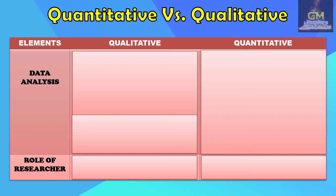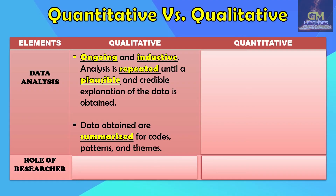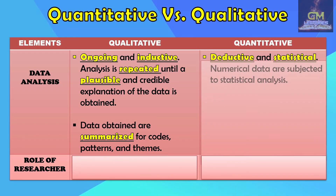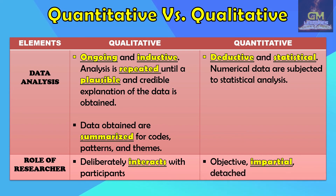In terms of data analysis, in qualitative research the analysis is ongoing and inductive, meaning it is repeated until a credible explanation of the data is obtained. Qualitative data are summarized for codes, patterns, and themes. Whereas in quantitative research, the data analysis is deductive and statistical, meaning numerical data are subjected to statistical analysis. With regard to the role of researcher, a qualitative researcher deliberately interacts with the participants, while a quantitative researcher is seen to be objective, impartial, and detached.